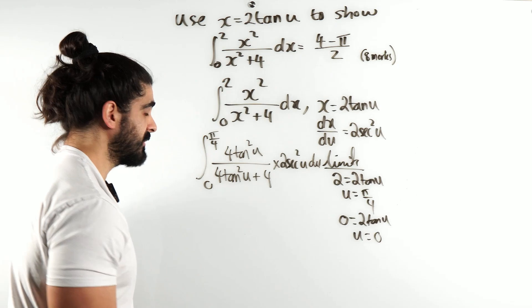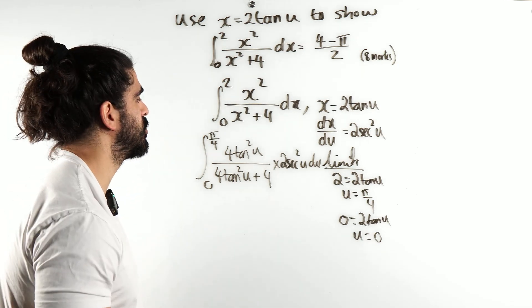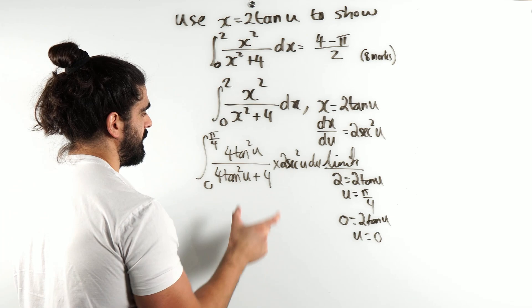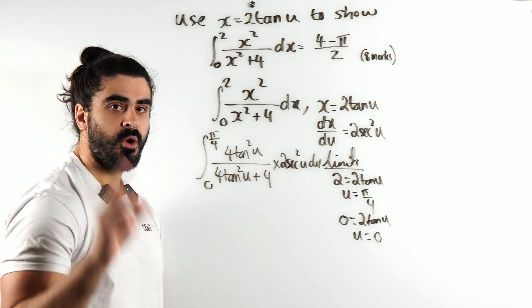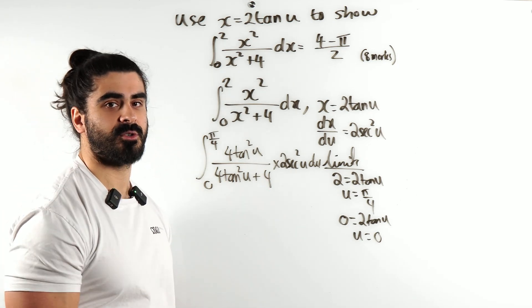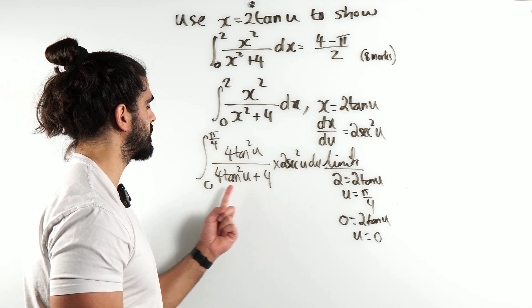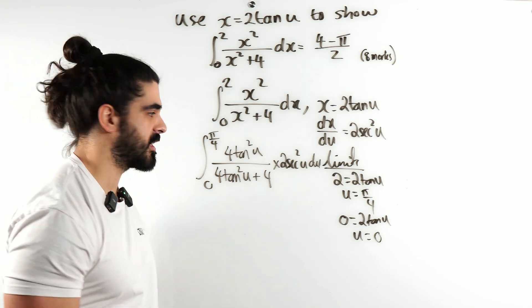Now, there's a reason why they gave us this substitution because there should be cancellations. And there is. We know 1 + tan²(u) = sec²(u). So 4 + 4tan²(u) = 4sec²(u).